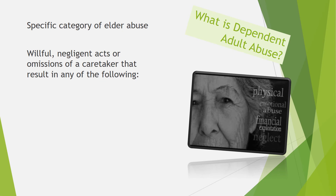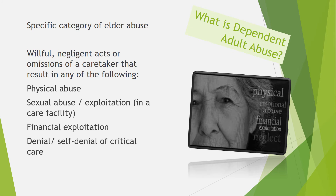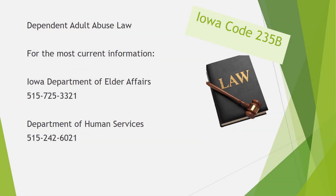Dependent Adult Abuse is a specific category of elder abuse. It is defined by any of the following as a result of the willful or negligent acts or omissions of a caretaker: physical abuse, sexual abuse, sexual exploitation within a care facility, financial exploitation, and denial or self-denial of critical care. In Iowa, elder abuse is reported under the Dependent Adult Abuse Law, Iowa Code Chapter 235B. This law is specifically aimed at protecting dependent adults from abuse by their caretakers.